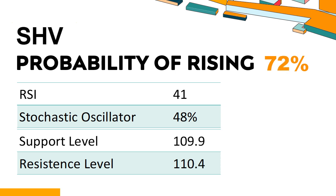Is SHV overbought or oversold according to technical data? Technical Signals and Analysis: SHV's 14-Day Relative Strength Index (RSI) value was 41. When the RSI is above 25 and below 50, it generally indicates that the stock is moderately bearish, meaning the security's price has been falling but has not yet reached oversold levels, typically considered an RSI reading of 25 or lower. The current stochastic oscillator of SHV is 48%, indicating a strong downtrend and selling pressure.